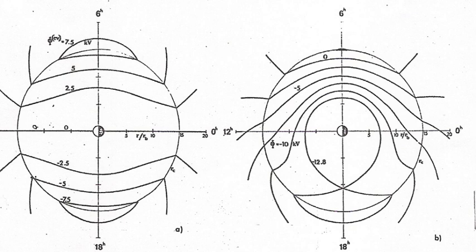potentials has a torus-like inner region of closed equipotential shells, called the plasmasphere, in which ionized particles of thermal energy remain trapped.